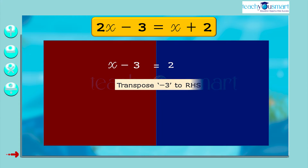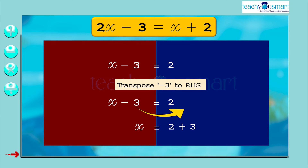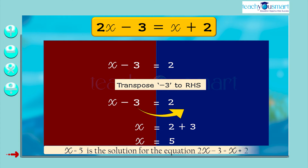Transpose minus 3 to the RHS to remove the constant part from the LHS. We get x equals 2 plus 3, that is x equals 5. So x equals 5 is the solution for the equation 2x minus 3 equals x plus 2.